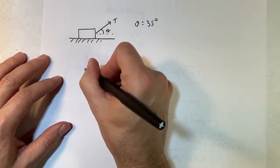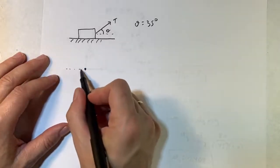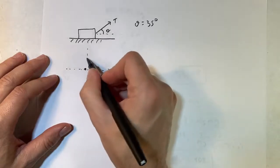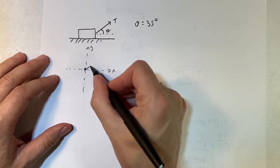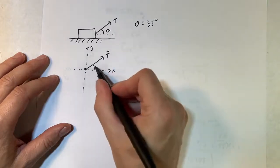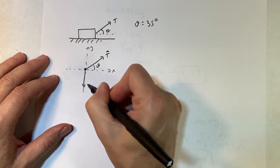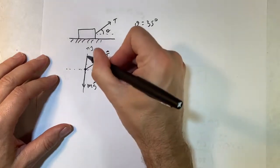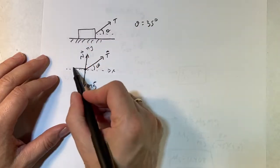Let's go ahead and solve for the tension at 35 degrees. Start with a free body diagram. I'll use this as the x direction and that as y. There's the tension at angle theta, the gravitational force, the normal force, and the frictional force.